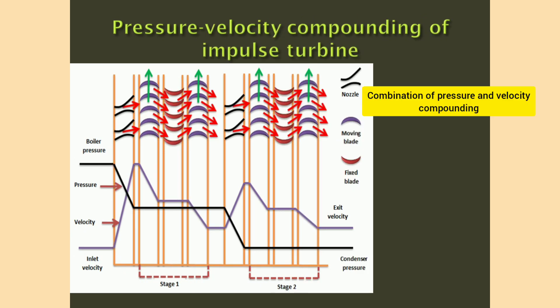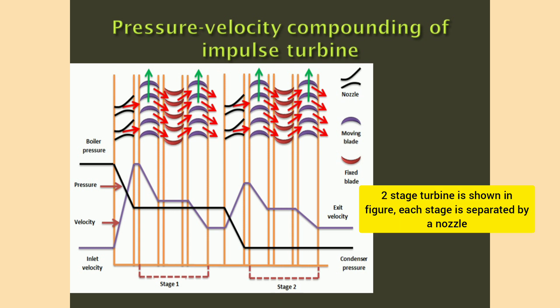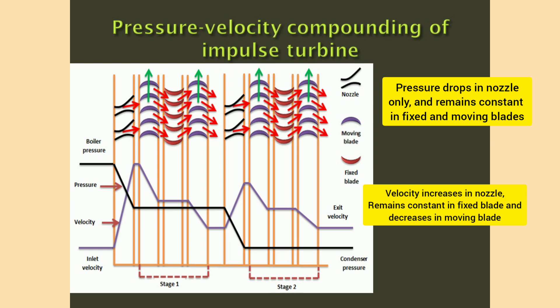Pressure-velocity compounding of impulse turbines is a combination of pressure compounding and velocity compounding. A two-stage turbine is shown in the figure. Each stage has a set of fixed and moving blades like in velocity compounding, and each stage is separated from the adjacent stage by a set of nozzles. Pressure drops in nozzles only and remains constant in fixed and moving blades. Velocity increases in nozzles, decreases in moving blades, and remains constant in fixed blades. This arrangement offers large pressure drop in fewer stages.